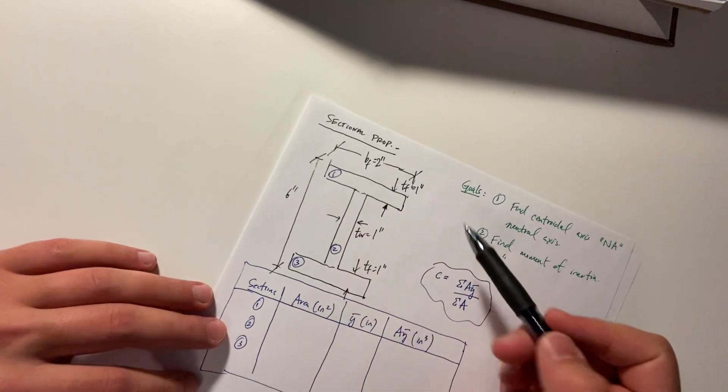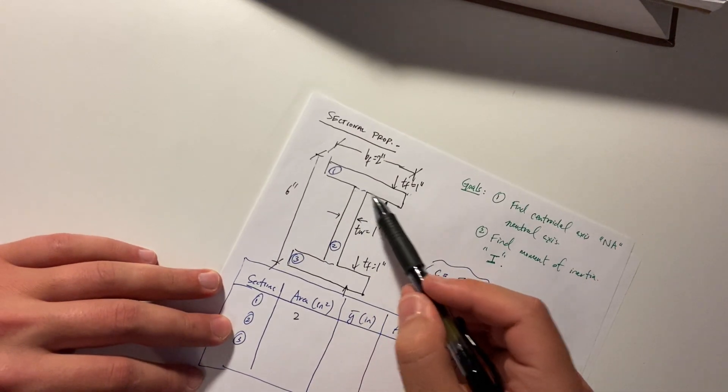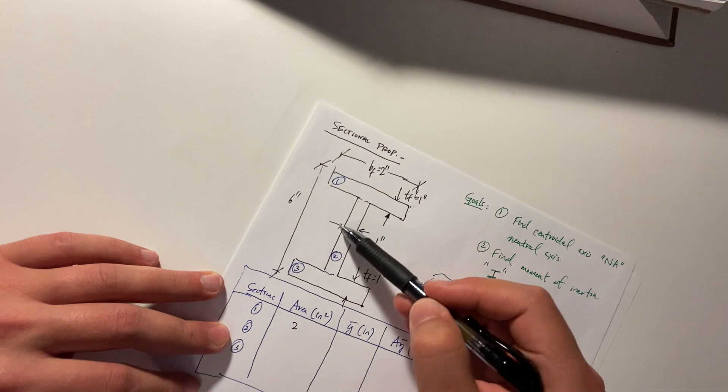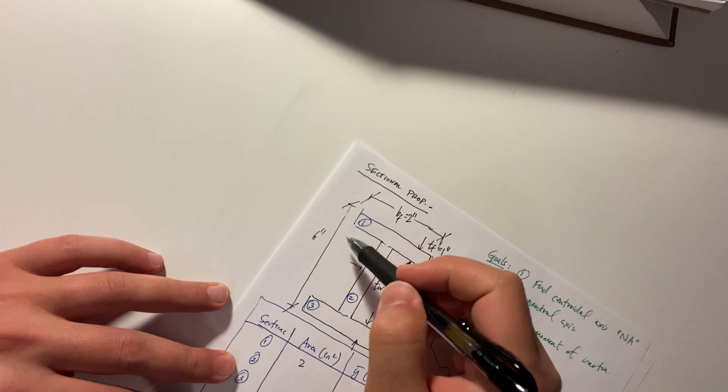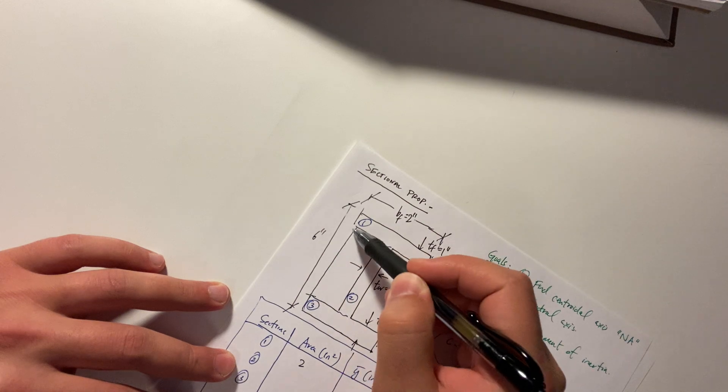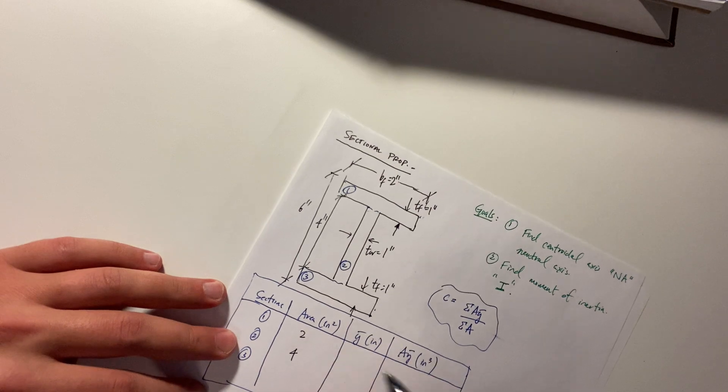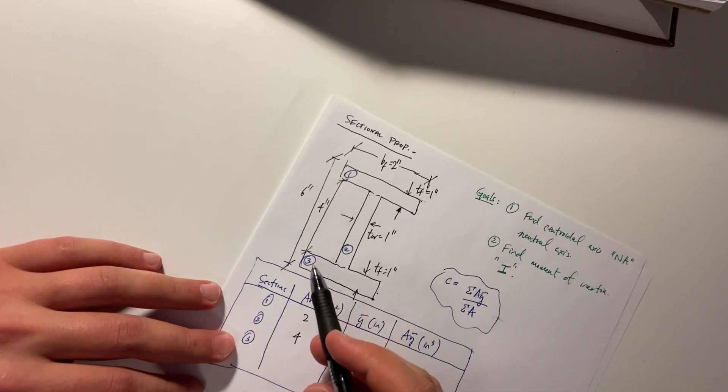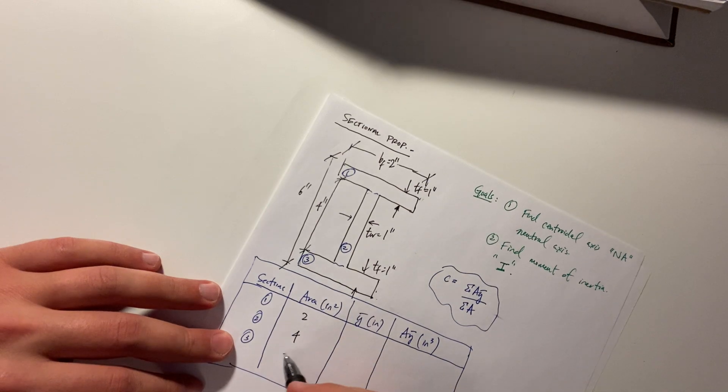Section one, what's the area? Two times one, groundbreaking. Section two, area. One times six, minus one, minus one. It gives us this length, which is what? Four. Four times one is four. Section three. One times two is two.